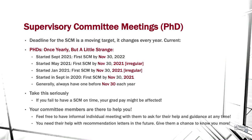A formal committee meeting can be stressful, but the best way to alleviate that is to meet with members informally one-on-one beforehand. Take the deadline seriously: if you don't have a committee meeting on record with SGS, there can be consequences. Your research scholarship — the amount your supervisor has to pay you — could go up significantly because SGS could remove faculty or department support. So take it seriously and get your committee meeting done before November 30th.